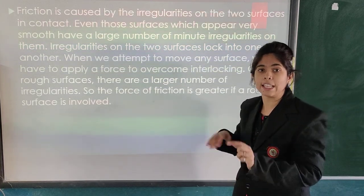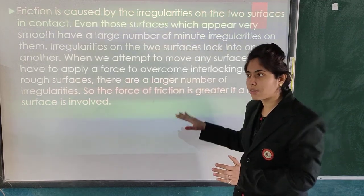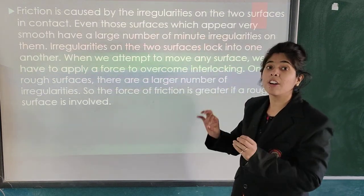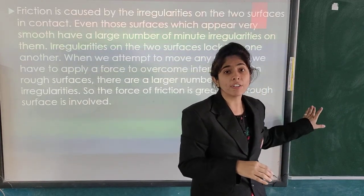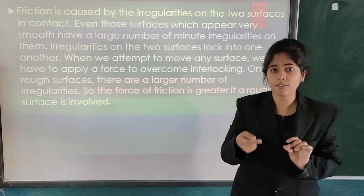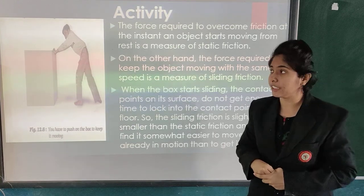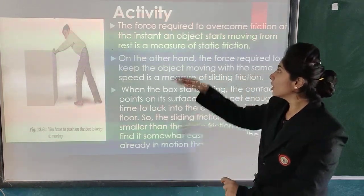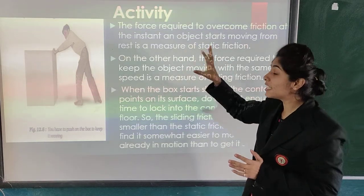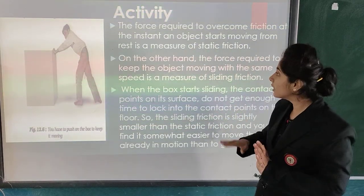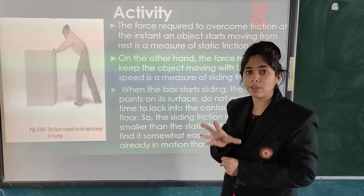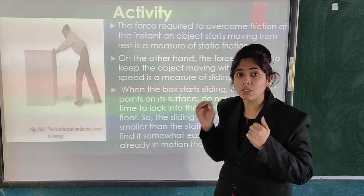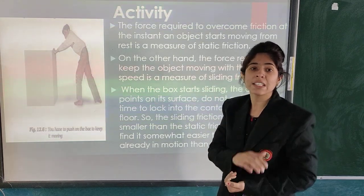Sometimes I try it twice or thrice and then only the slide moves, because even a smooth surface has small irregularities. If it were a very rough surface, it would change very fast. Here you can see a child pushing a table. The force required to overcome friction at the instant an object starts moving from rest is a measure of static friction. Whatever you are pushing has to come to a stop — that is because of static friction.